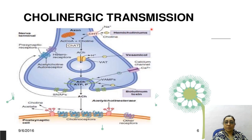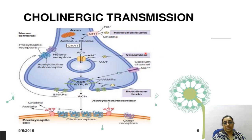Hemicholinium is a substance that inhibits the entry of choline into the axon — this is the rate-limiting step of acetylcholine synthesis. The second step is acetylcholine entering the synaptic vesicle; vesamicol is the substance that inhibits entry of acetylcholine into the synaptic vesicle. Third, botulinum toxin inhibits the release of acetylcholine from the synaptic vesicle.